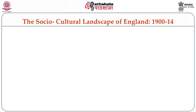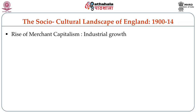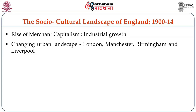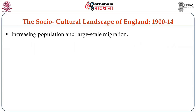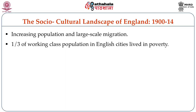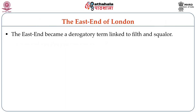The socio-cultural landscape of England from 1900 to 1914 is marked by the rise of merchant capitalism. Industrial growth was very much present. The changing urban landscape in London, Manchester, Birmingham and Liverpool was a remarkable feature of the times. Increasing population and large-scale migration was a troubling factor. One third of the working class population in English cities lived in poverty. The East End of London in those days became a derogatory term linked with filth, squalor and deprivation.